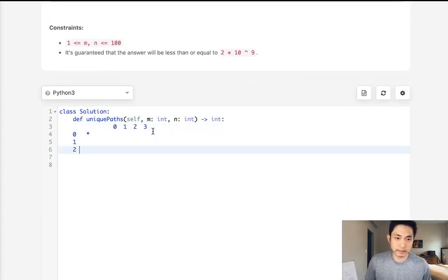This isn't too bad. It's a dynamic programming problem. Let's say we had a grid that looks like this—it's four by three—and we're going to be starting here at the top left.